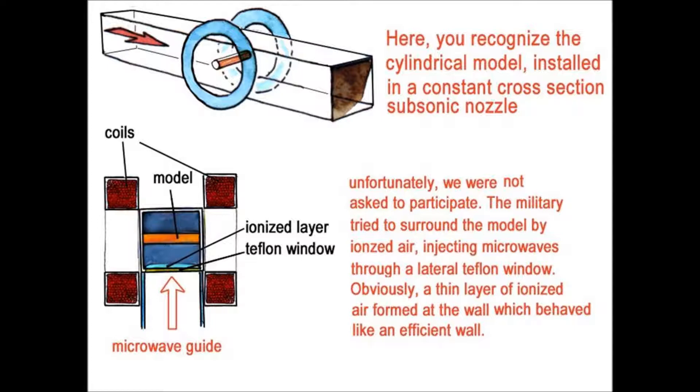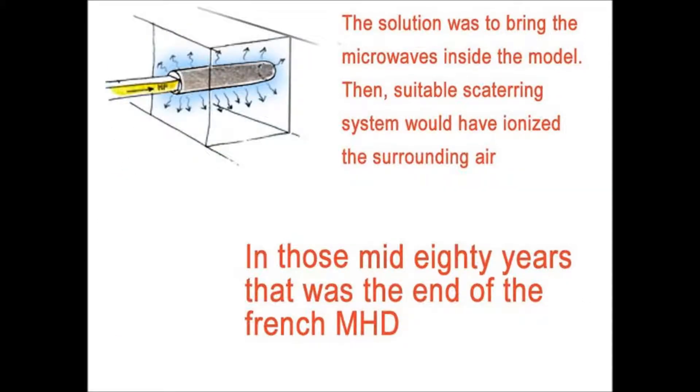Because if I had been asked to participate, I would have given the solution immediately. The solution was to inject the microwave by the model as shown on this slide. And then inside the cylinder, you put some material that scatters the waves all around. And then the ionization is installed very close to the model, exactly in the place you would like to see this ionization to be installed.